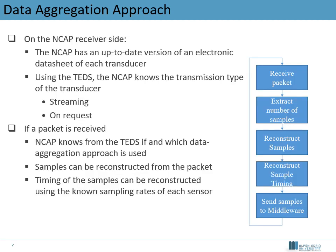As explained previously, the NCAP needs an up-to-date electronic datasheet of the transducer it communicates with. Using the datasheet, it can configure its endpoint accordingly. Going through the flow: the NCAP receives the packet from the transducer via the WNP. Through the TED, it knows the format of the data aggregation approach and knows that the first received bytes define the overall number of samples in the packet. The next bytes are reserved for the frame number. After this, the measured samples of each sensor follow; using the known number of samples and the information in the TED stating how many bytes each sensor sample consists of, the samples can be restored.